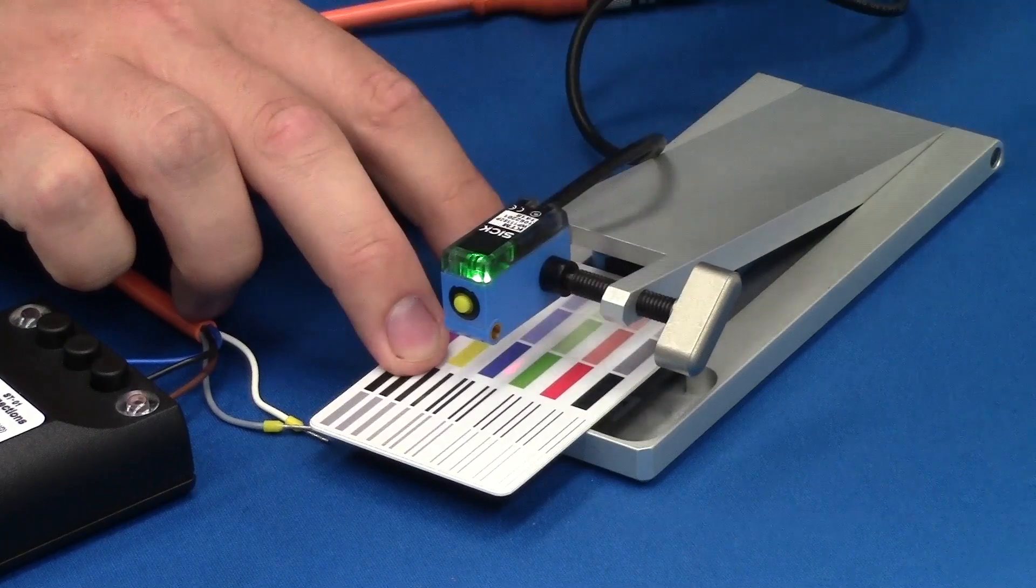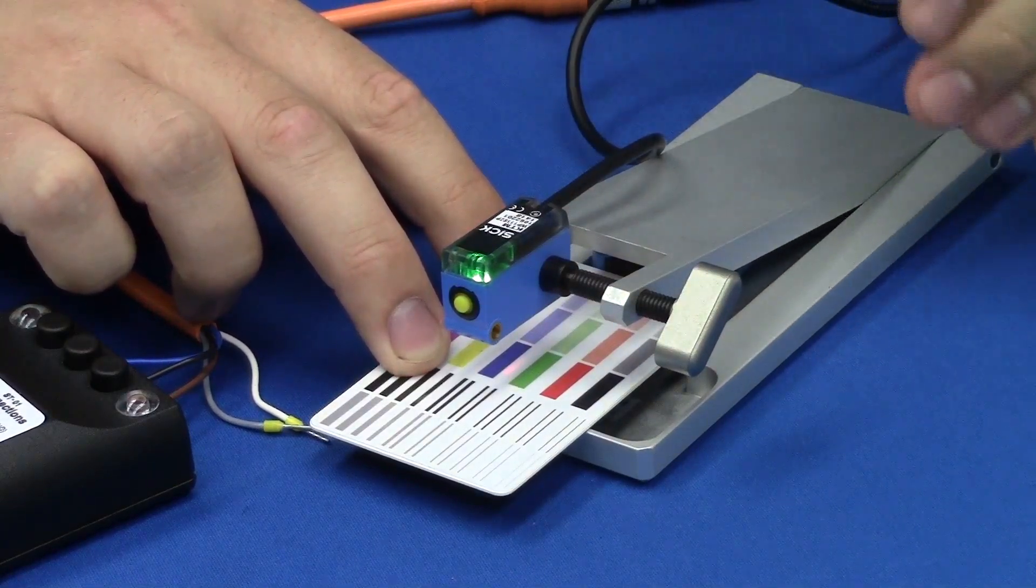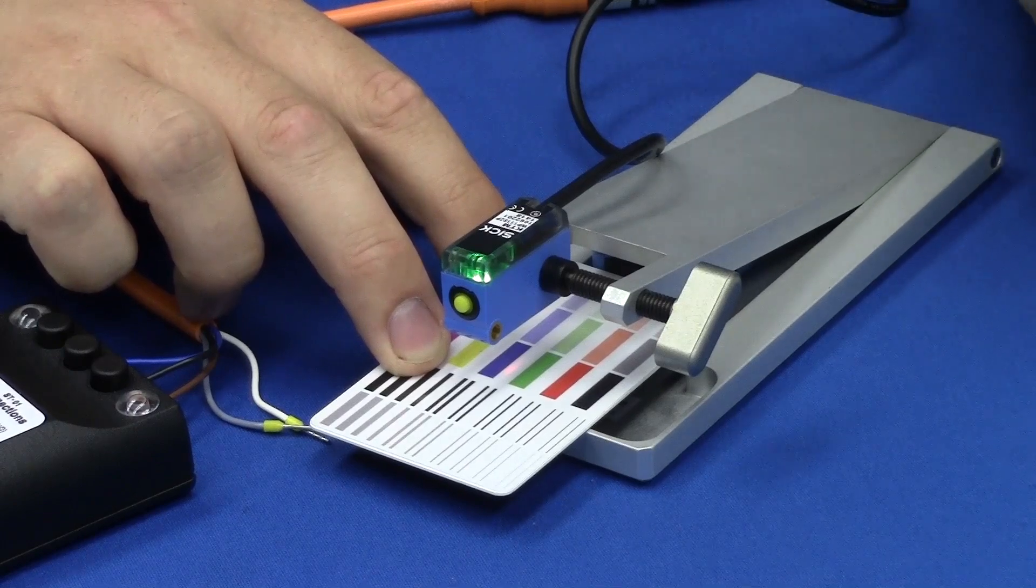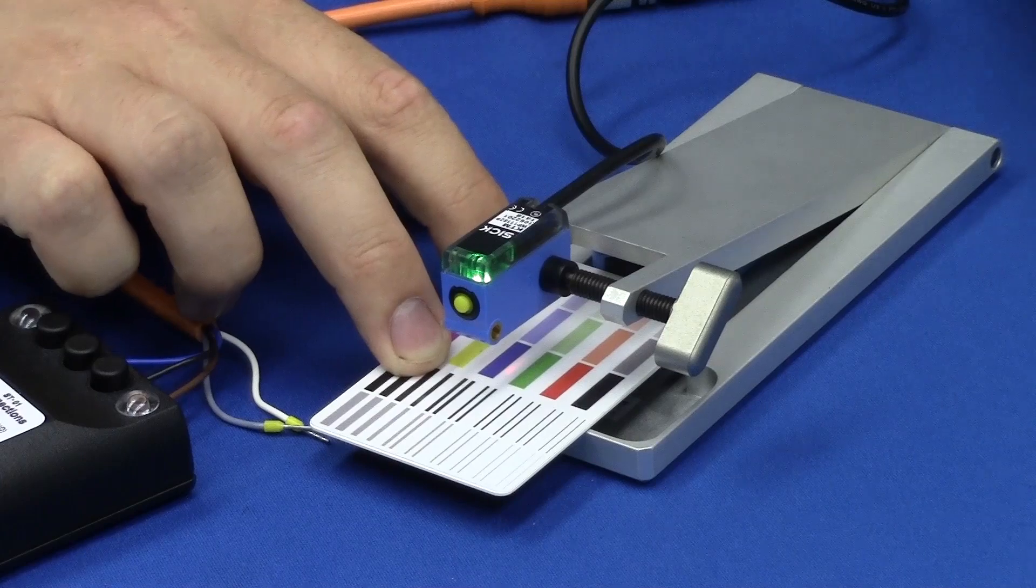It's very important that you show the registration mark for a shorter amount of time than you show the background, because the KTM automatically selects the mark that it sees for the shortest amount of time, because typically registration marks are small on the product.